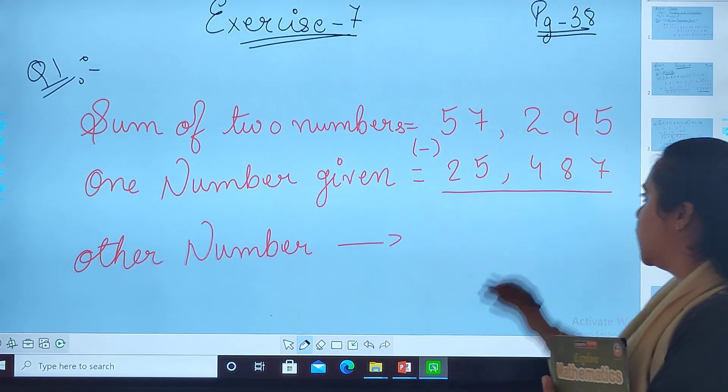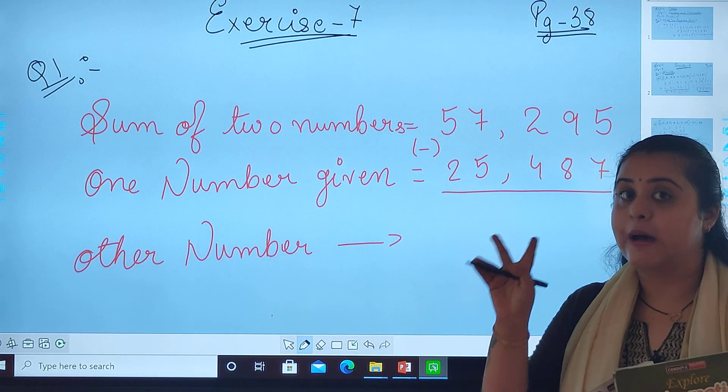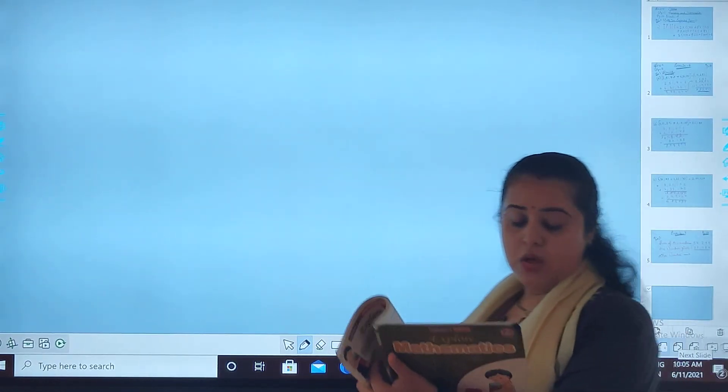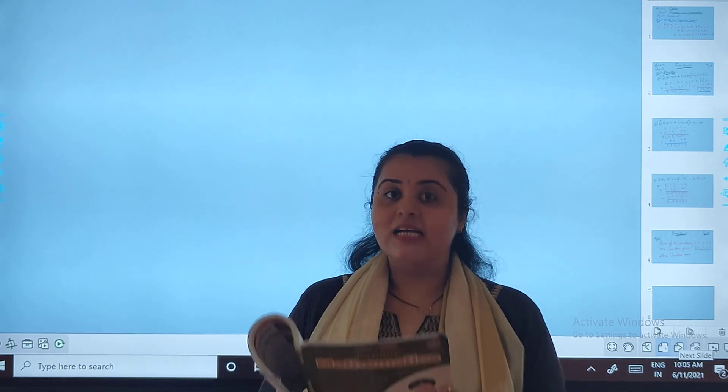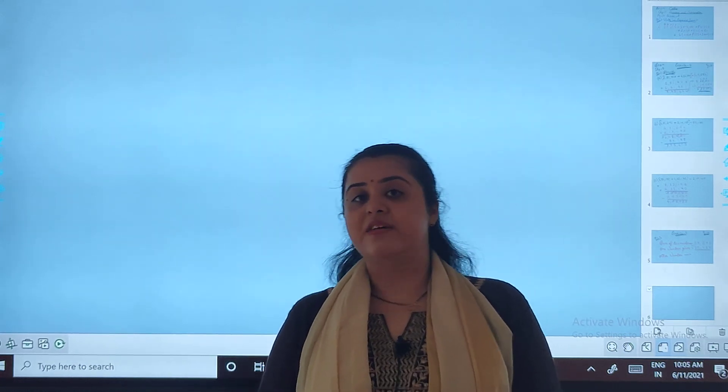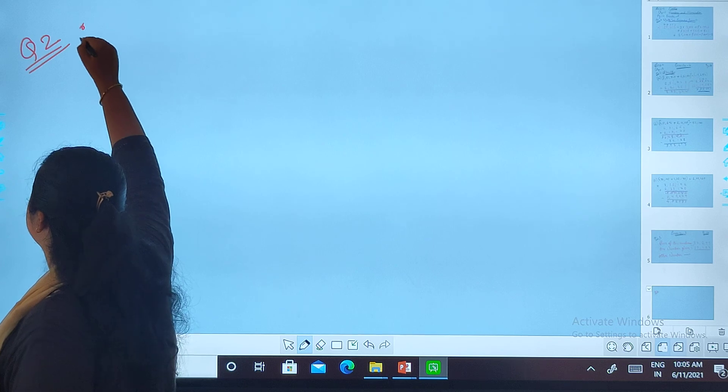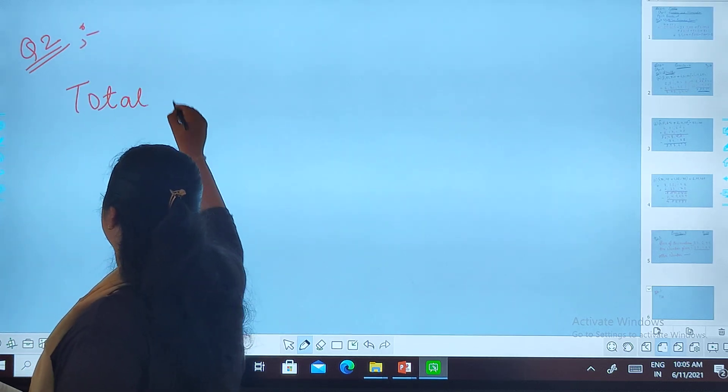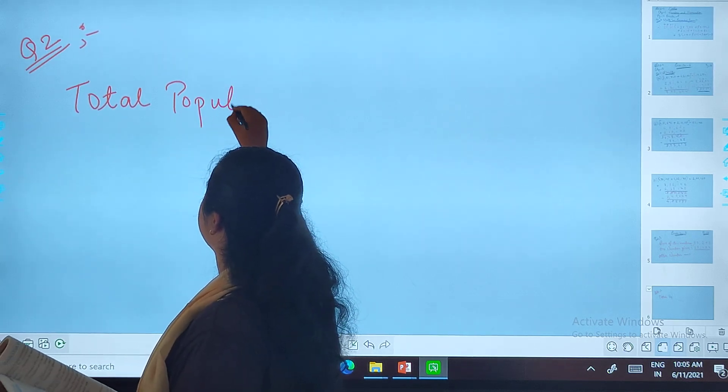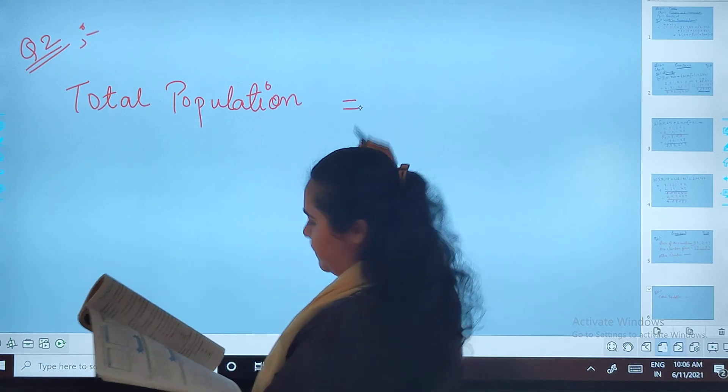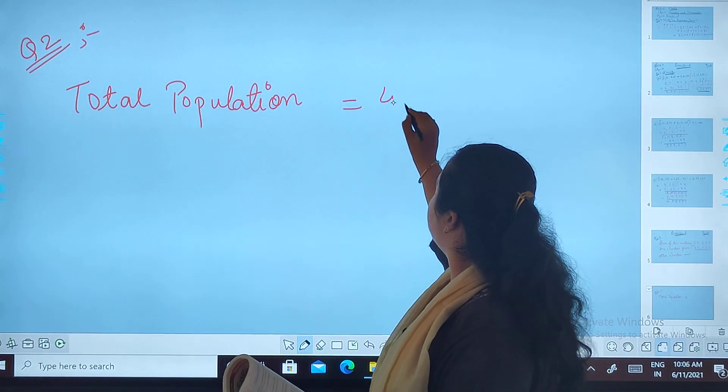Okay students. Students, you can move to the subtraction part. Let's move through sum of two. Let's read the question together. The population of a city is 4,75,173. Let's write it. Total population. Question number two. Total population is 4,75,173.